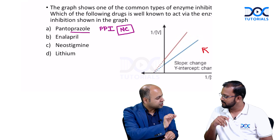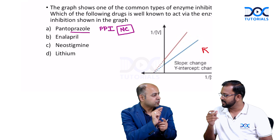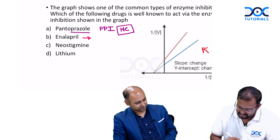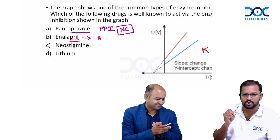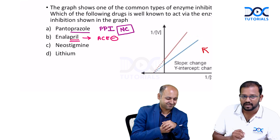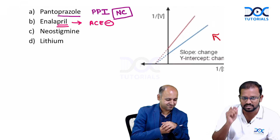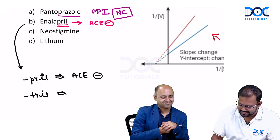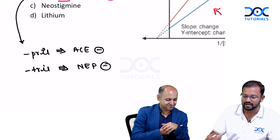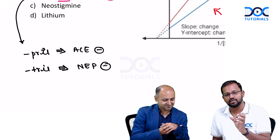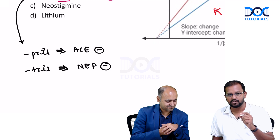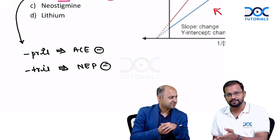Next option is enalapril. If a drug name ends with '-pril', it belongs to the ACE inhibitors — angiotensin converting enzyme inhibitors. If a drug name ends with '-tril', it is a NEP inhibitor (neutral endopeptidase inhibitor). The major '-tril' drugs are sacubitril, used for congestive cardiac failure, and racecadotril, used for secretory diarrhea.